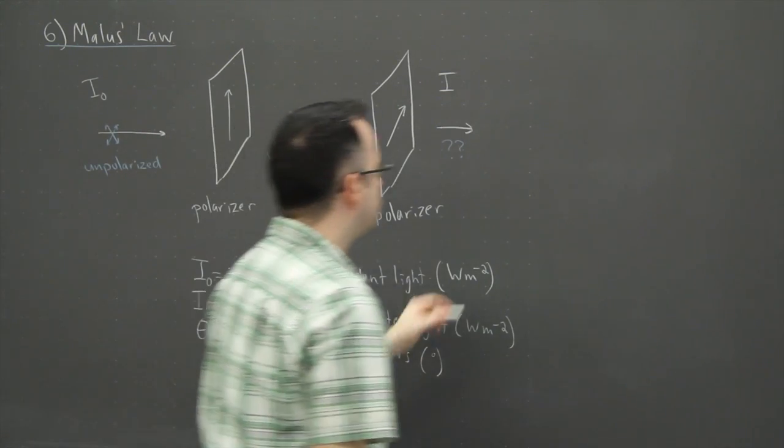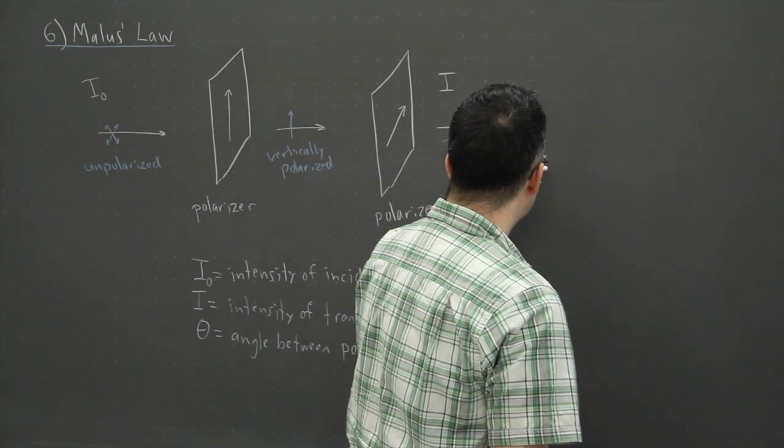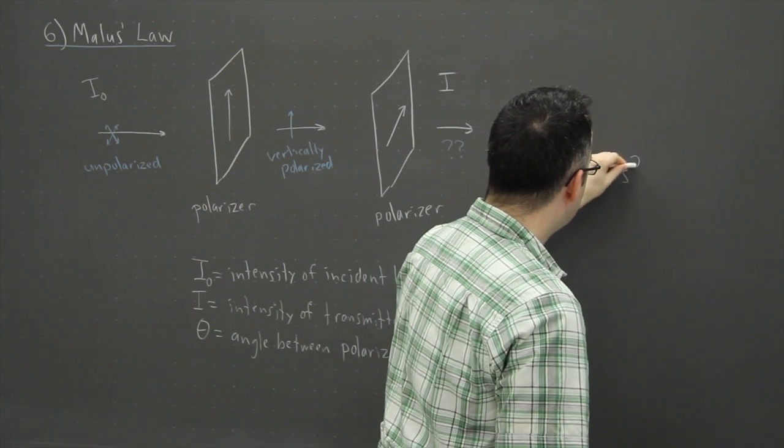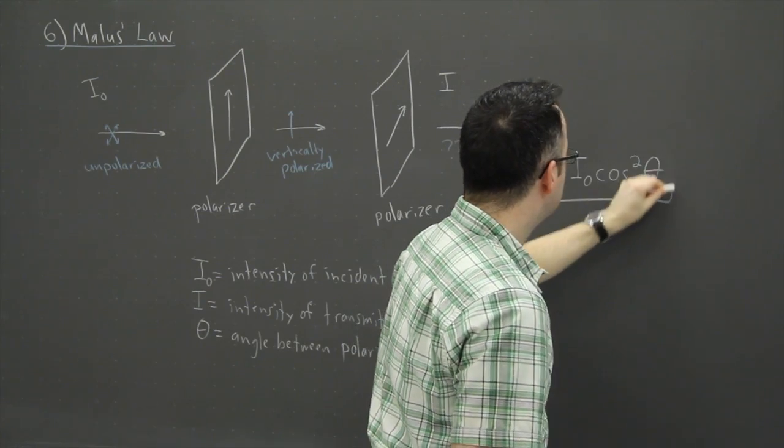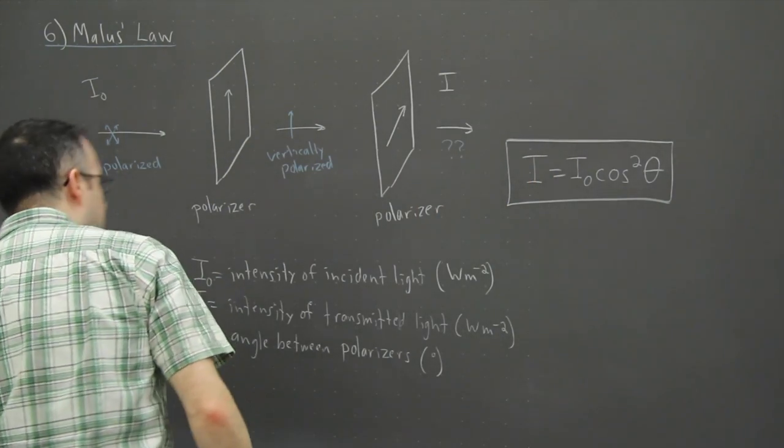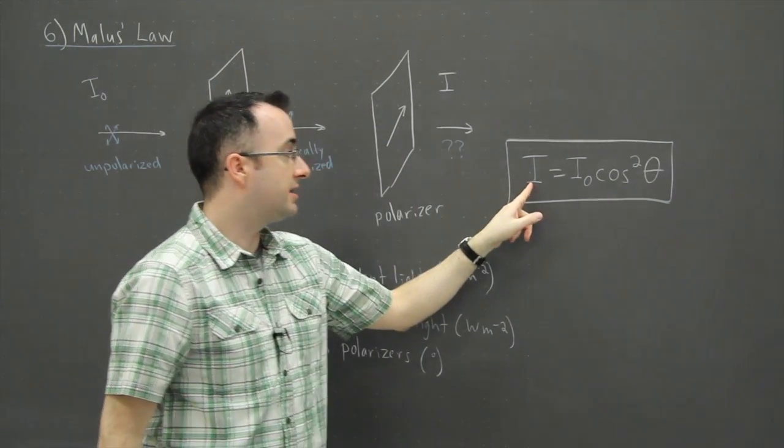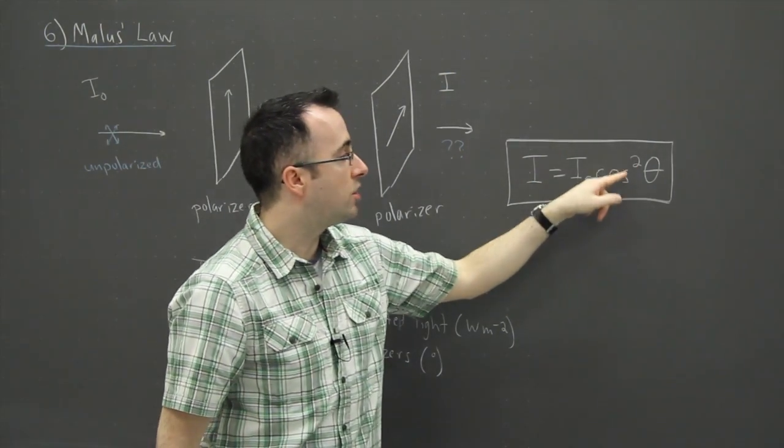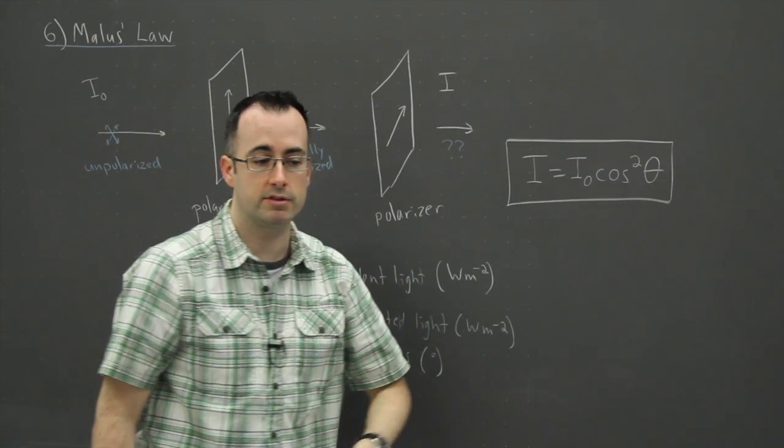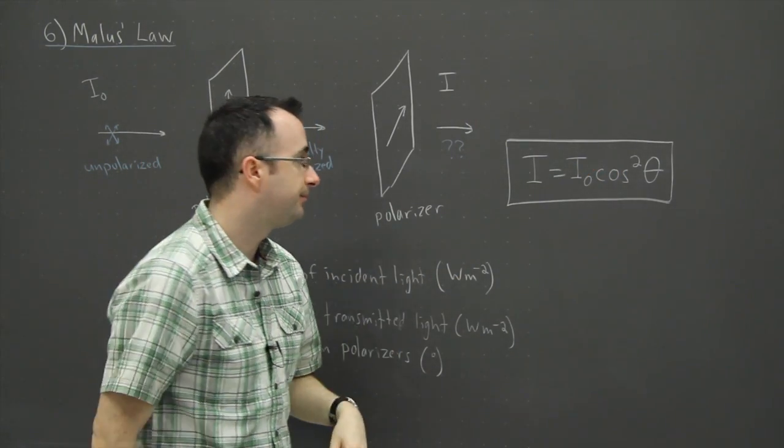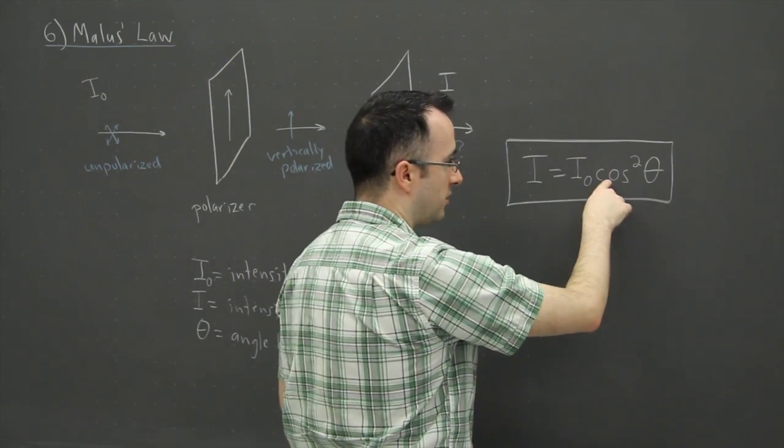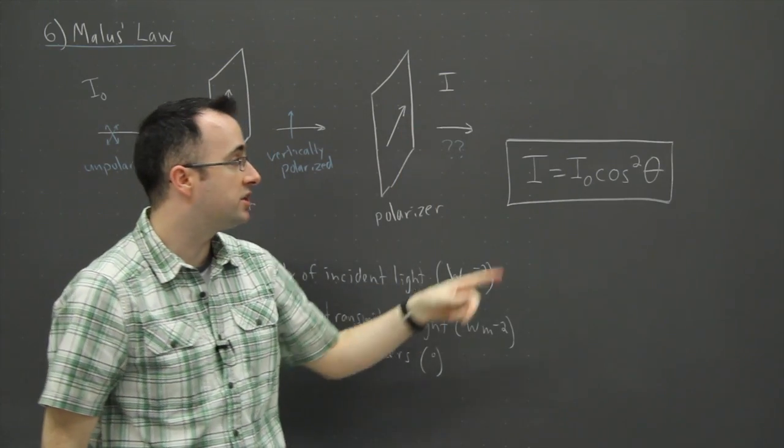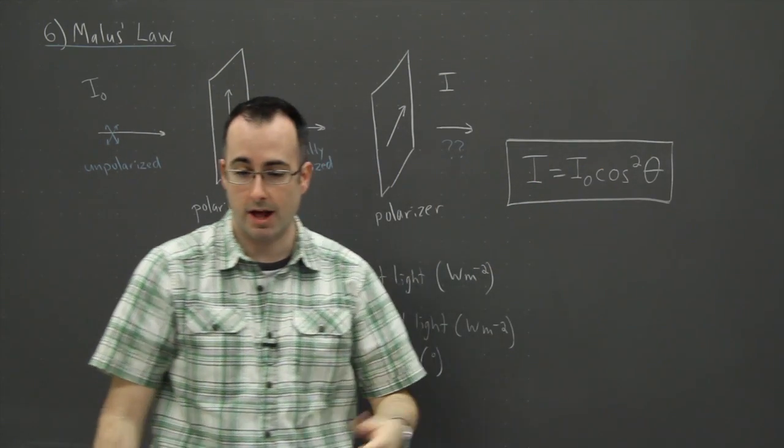The equation goes like this. This is Malus's law, it's on your data booklet. I equals I zero cosine squared of theta, that's it. What it tells you is that the intensity of light that's transmitted is related to the incoming light, the incident light, but it depends on the square of the cosine of the angle. You take the cosine of the angle and you square that answer. The notation is normally to write cos squared, but it's really cosine theta all in parentheses squared. But in math, the notation we use is cos squared theta.